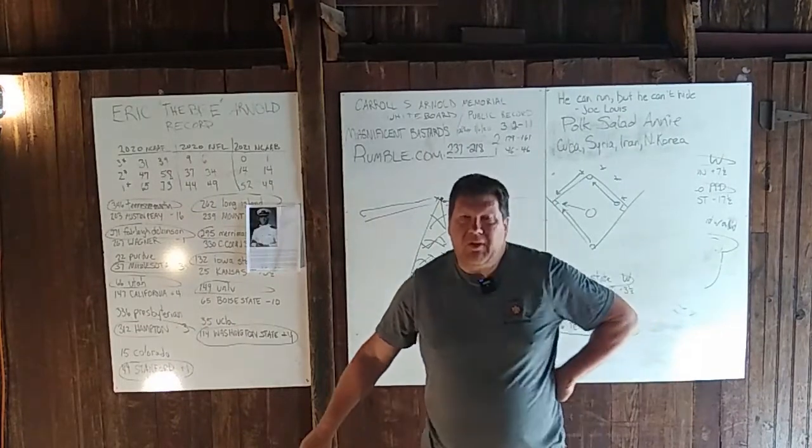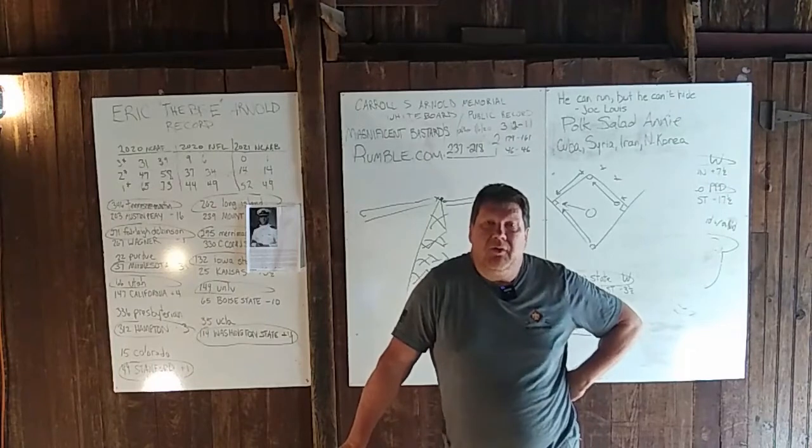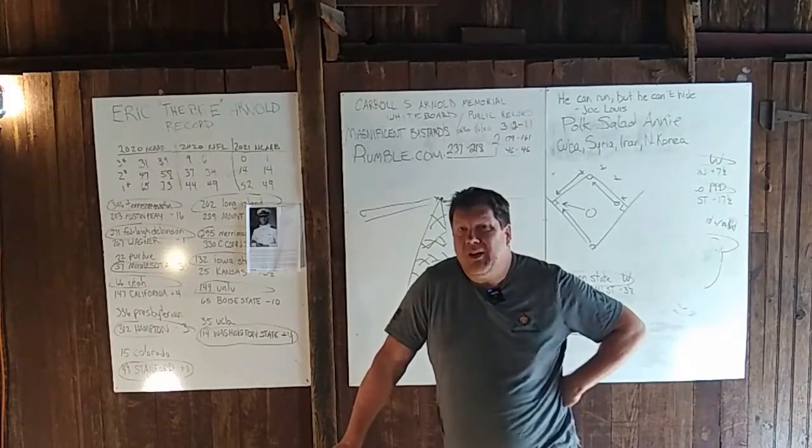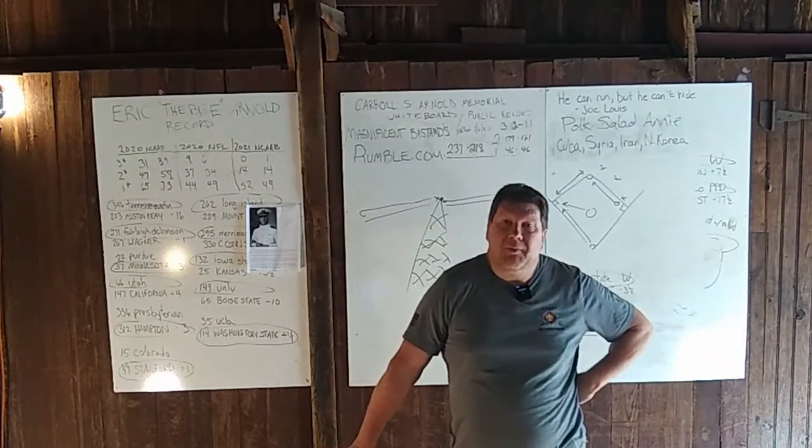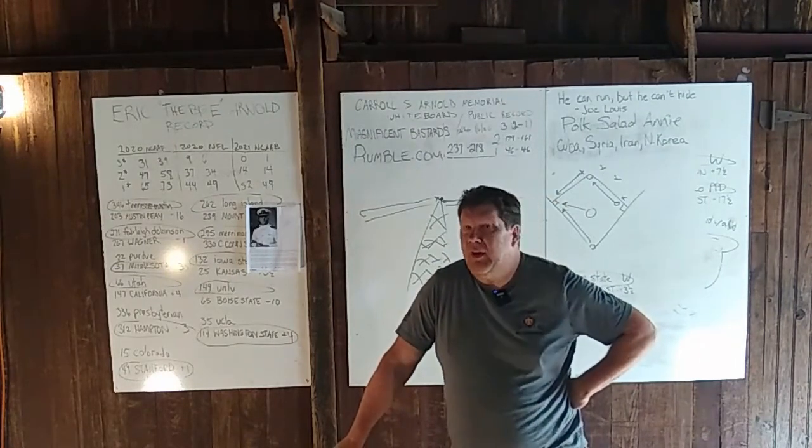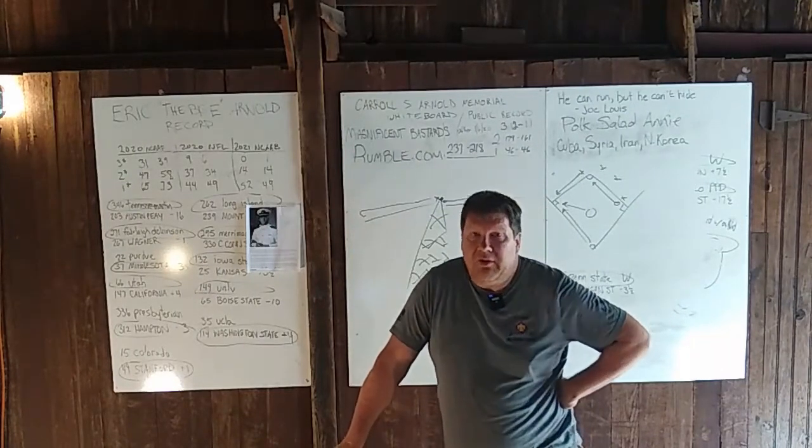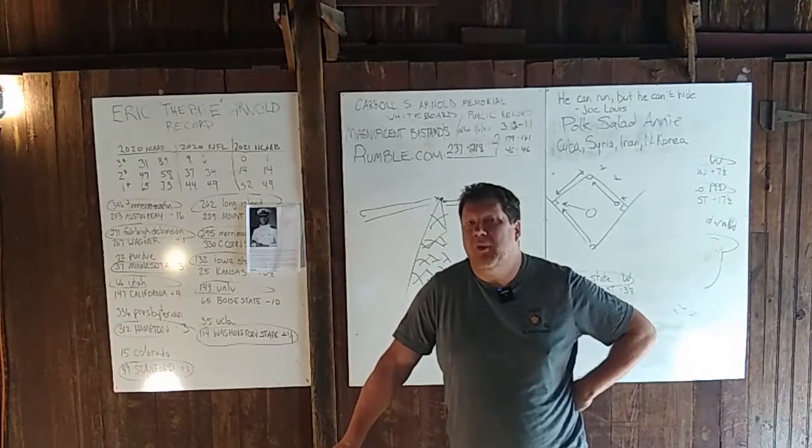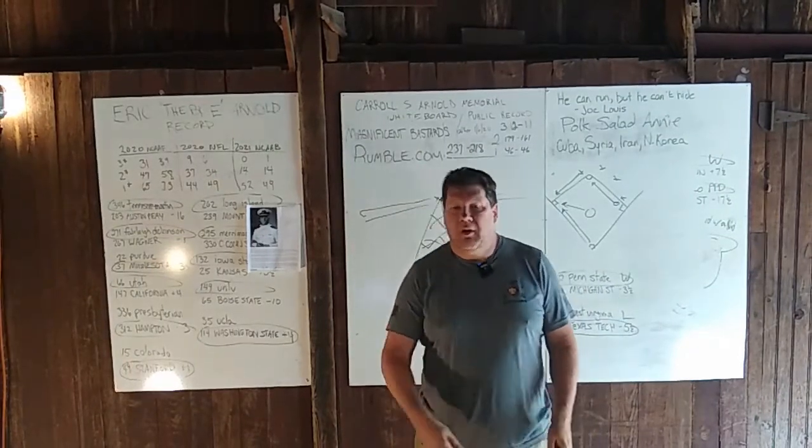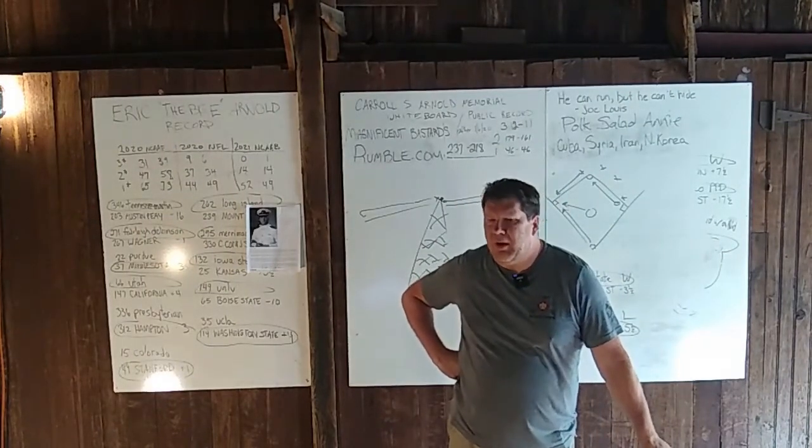Martin Niemoller, first they came for the socialists, and I did not speak out because I was not a socialist. Then they came for the trade unionists, and I did not speak out because I was not a trade unionist. Then they came for the Jews, and I did not speak out because I was not a Jew. Then they came for me, and there was no one left to speak for me.